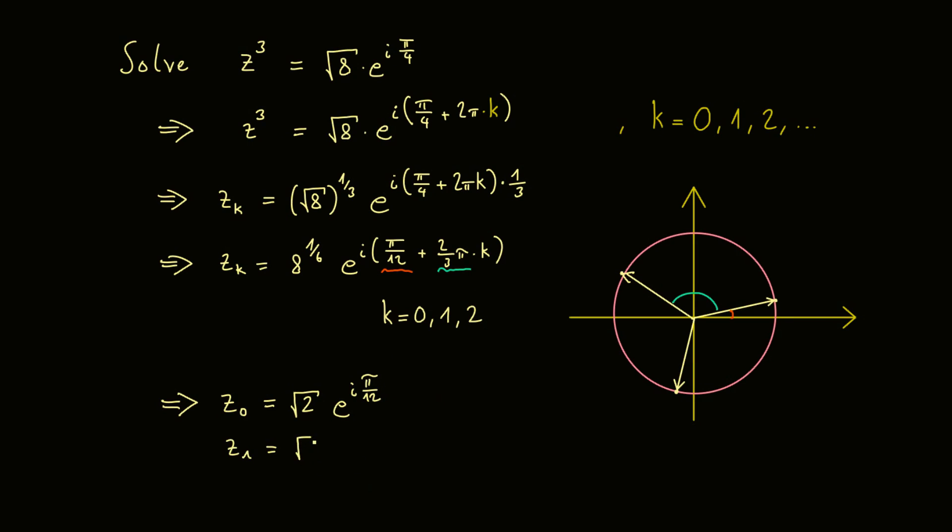For the second solution, z1, we have still the same absolute value, but then e to the power i, and now π over 12 plus 2 over 3 π. But this one is just 8 over 12 π, so in sum we have 9 over 12 π.